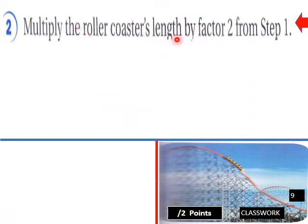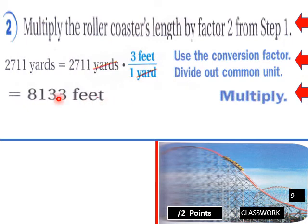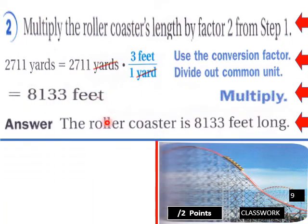Now multiply the roller coaster's length by factor two: 2,711 yards times three feet over one yard. The yards cancel. 2,711 times 3 equals 8,133 feet. So the Steel Dragon 2000 is 8,133 feet long.